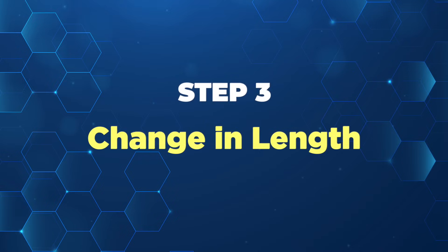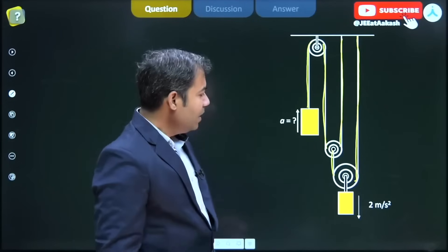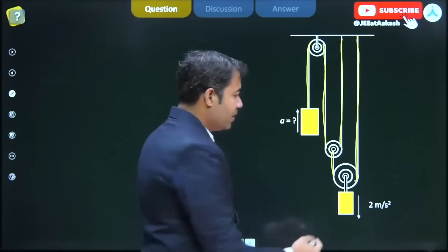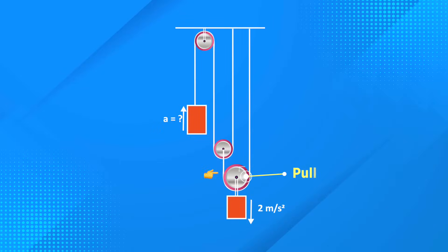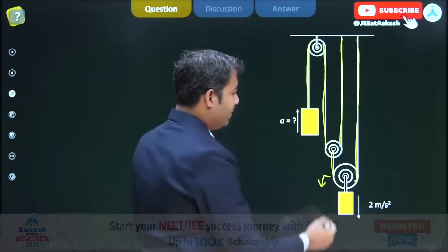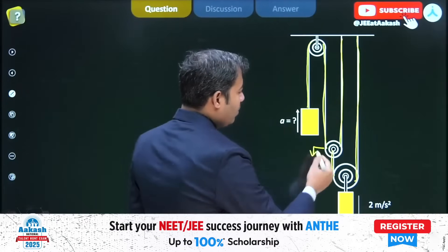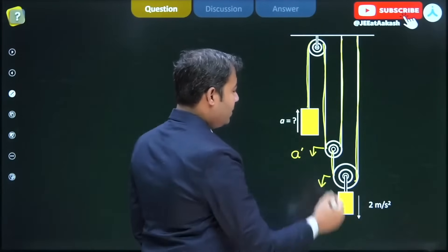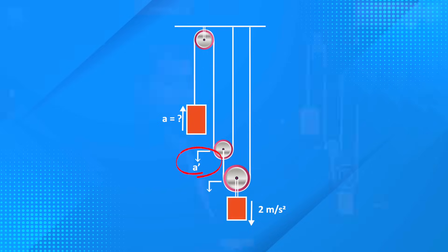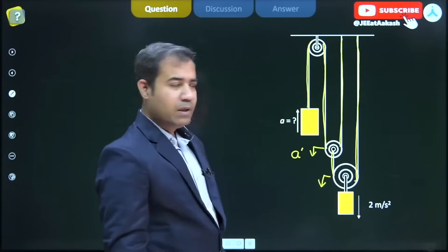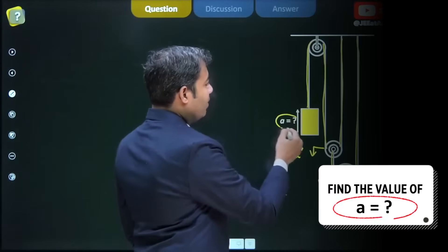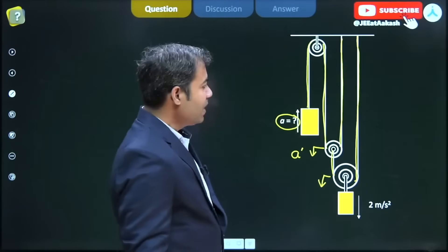If we start, this pulley goes at 2 meters per second squared, so this pulley we assume goes at a' meters per second squared downward. We have to find the value of a.